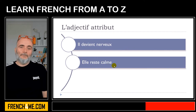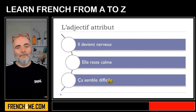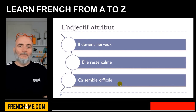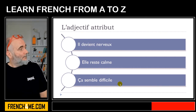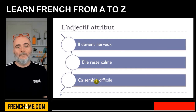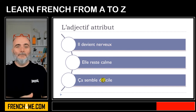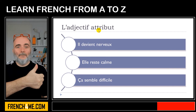Elle reste calme. Ça semble difficile. So in these cases, even without être, we have other verbs: devenir — to become, rester — to stay, and sembler — to seem. In all these cases you also introduce adjectives after these verbs, and these adjectives are what we call adjectifs attributs.